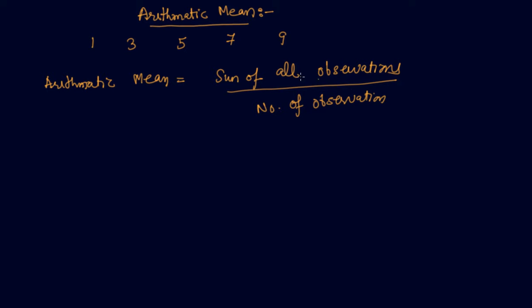Students, please tell me about the arithmetic mean of these five numbers. What you will do is add all the numbers, and the total numbers are five: 1, 2, 3, 4, 5.